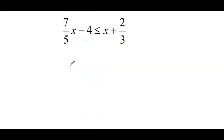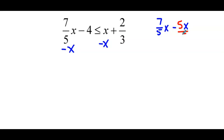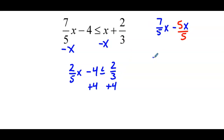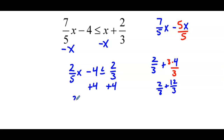Our next example: 7 over 5 times x minus 4 is less than or equal to x plus 2 thirds. We start by subtracting x from both sides. Working that out: 7 fifths x minus x requires a common denominator of 5, giving 2 over 5 x. So we have 2 over 5 x minus 4 is less than or equal to 2 thirds. Then we add 4 to both sides. Computing 2 thirds plus 4 with a common denominator of 3 gives 14 over 3. So 2 over 5 x is less than or equal to 14 over 3.